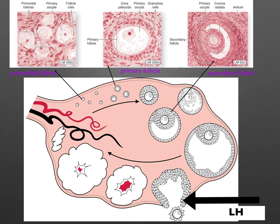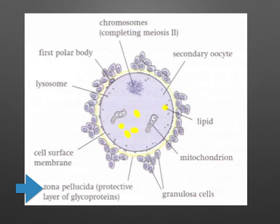Looking more closely at the ovary, you can see the secondary oocyte being released out of the ovary into the oviduct. The secondary oocyte is surrounded by a protective layer of glycoprotein called the zona pellucida, and a layer of granulosa cells called the corona radiata. This oocyte will move down the oviduct by peristalsis.